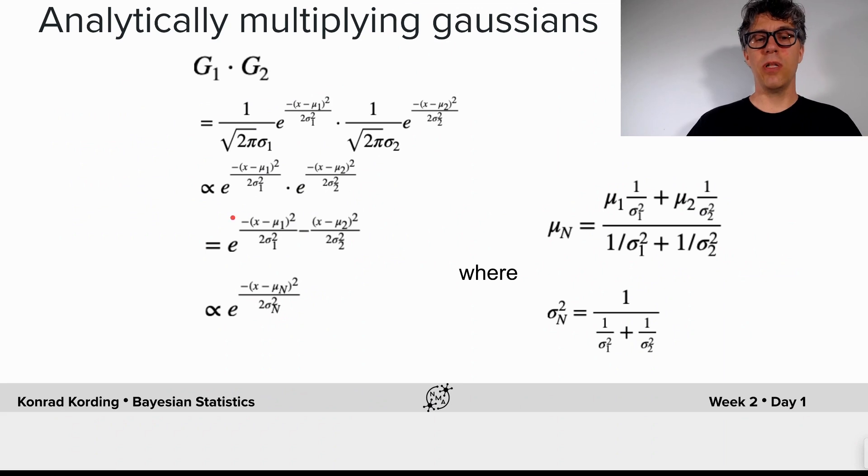Now look, it's a polynomial of degree two here. So that means that we can rewrite this as a new polynomial like that. And it turns out we obtain a new Gaussian.